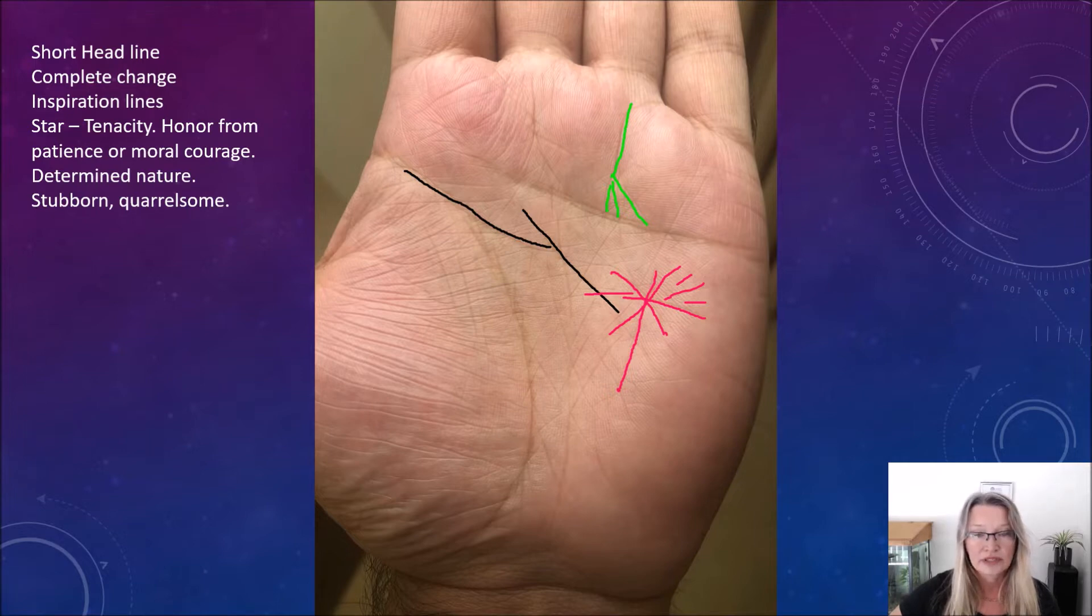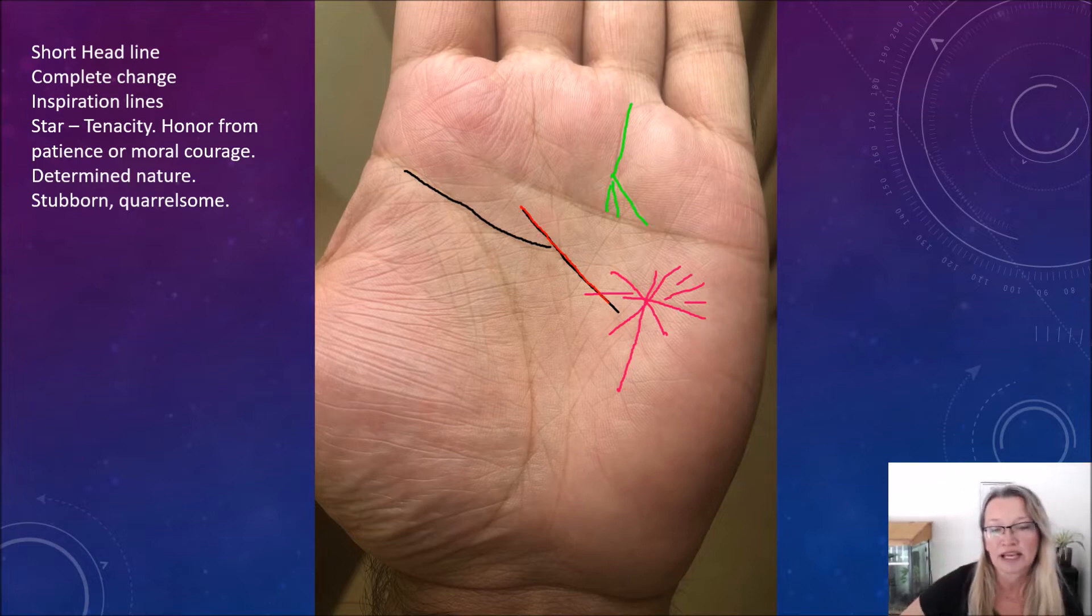And I was very surprised to see this kind of headline on this hand. It's very interesting because it's so short. A short headline does give a quick mind and they like to get to the point quickly. They don't like to dwell on something too long or go into too much detail. But there seems to be this line here that ends at the end of the headline. And that's showing at a point in life where there's a big change, whether it's already happened internally in the mind, there might have been a change in outlook.